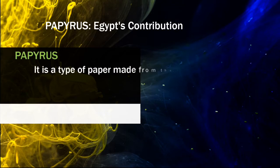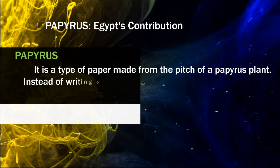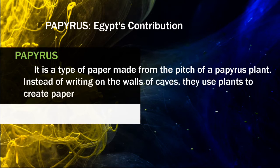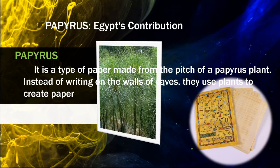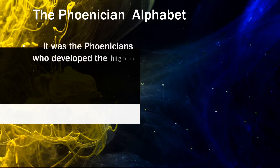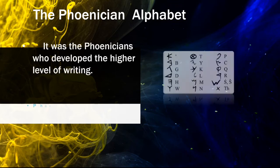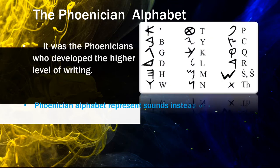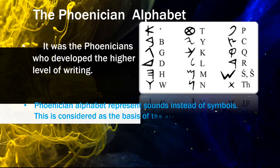Papyrus is a type of paper made from the pith of a papyrus plant. Instead of writing on the walls of caves, they used plants to create paper. Next was the Phoenician alphabet. It was the Phoenicians who developed the higher level of writing. The Phoenician alphabet represents sounds instead of symbols. This is considered the basis of the alphabet system that we use today.